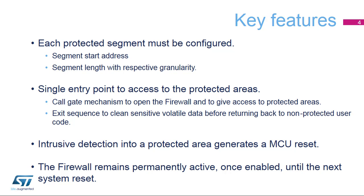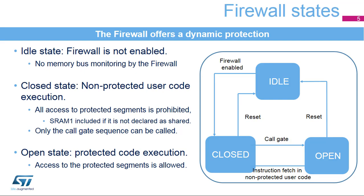To guarantee a minimum level of protection, once the firewall is enabled, it remains active until the next MCU system reset. The firewall is based on three states to ensure a dynamic protection of the secure segments. The idle state is the default state when the firewall is not enabled; in this state, the AHB memory bus is not monitored. When enabled, the firewall enters closed state and all access to the protected segments is prohibited. The correct call gate entry sequence by non-protected executing code switches the firewall to the open state. The protected code can now be executed and access to non-volatile and volatile data segments is allowed. As soon as an instruction fetch is executed jumping back to the non-protected code area, the firewall switches back to closed state. Once closed, all access to the secure areas except for the call gate mechanism are killed by an MCU reset.